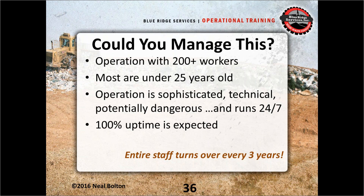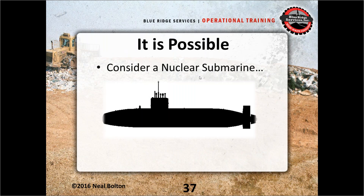Imagine managing an operation with more than 200 workers, most under 25 years old. The operation is technical, potentially dangerous, runs 24/7, and requires 100% uptime — and the entire staff turns over every three years. That's what happens on a nuclear submarine. Crew members go through months of training learning these systems so that they can have a transition plan and turn the crew over every three years. The secret to good systems is having a comprehensive set of performance manuals.